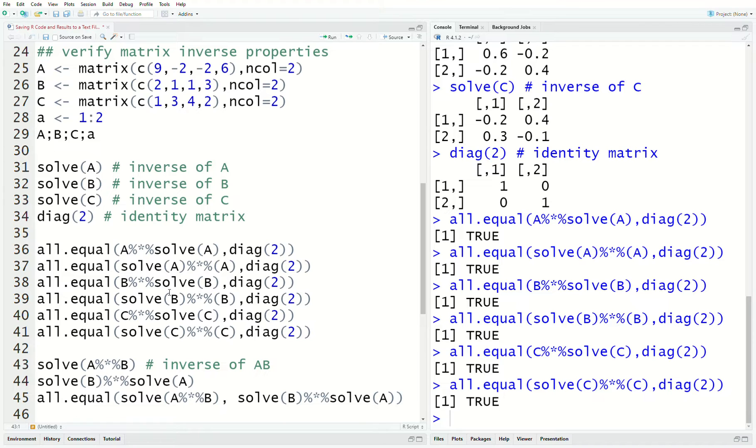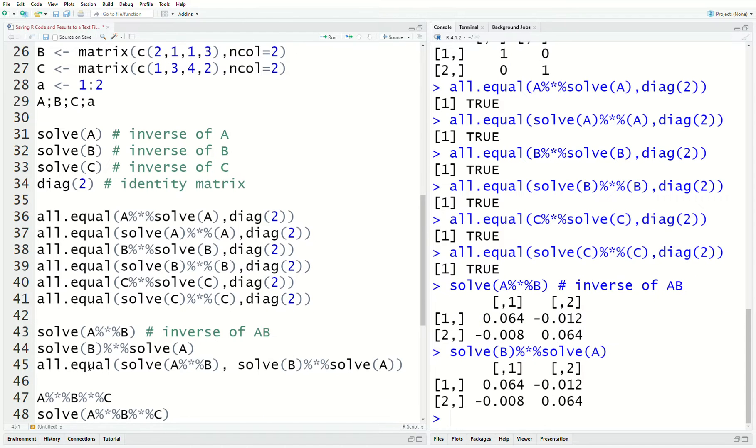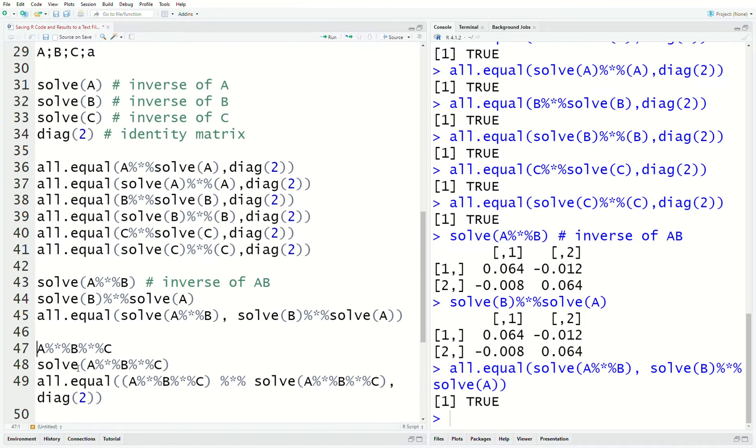Then we go on to the inverse of A times B. And this is it. But the inverse property says if we take the inverse of B times inverse of A, that is equal to the inverse of AB. And so, these two should be equal. And if we just look at the matrices, they are equal. Or we could put them in an all equal function to check. And they are.